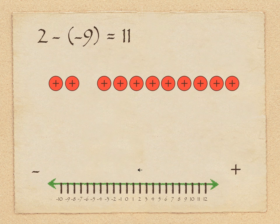On the number line, we have our caveman facing the negative sign because he's subtracting. But because he's told he's subtracting a negative, he's actually going to shuffle backwards for the first time in this section — because he's looking in that direction but is told not to do what he's inclined to do. He shuffles all the way back to 11 on the number line.